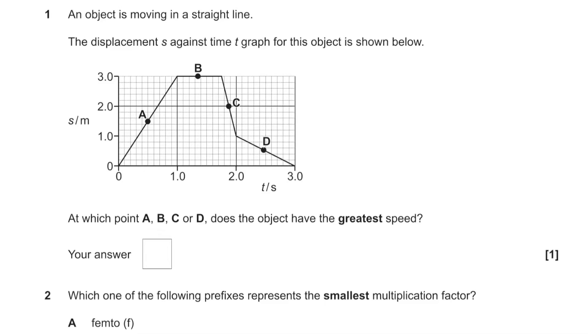Question 2: an object moving in a straight line — we have a displacement-time graph. Where does it have the greatest speed? Well, positive speed is going to be A, but we're just looking for the steepest gradient, so it's going to be C.